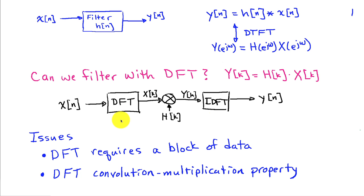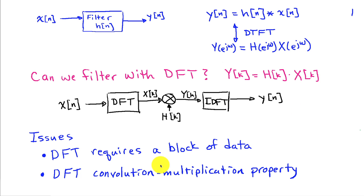There are a couple of issues to keep in mind with doing filtering in this manner. First, in order to use the DFT, you need to have a block of data — we're going to take a block of capital N samples of x of n. So we have to accumulate those samples and then get a whole block of output samples. The other factor is that the convolution-multiplication property for the DFT is slightly different than that for the discrete time Fourier transform, as we will see shortly.